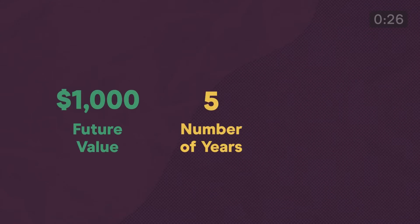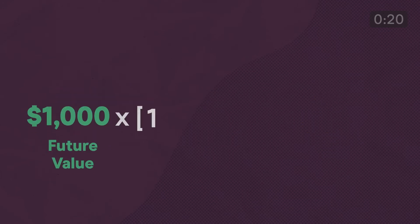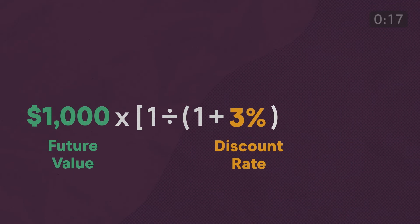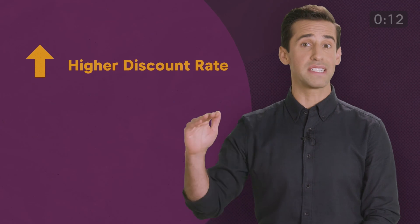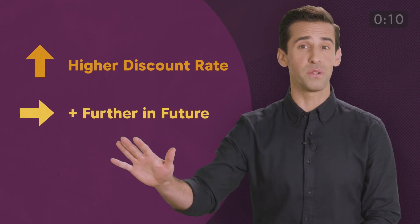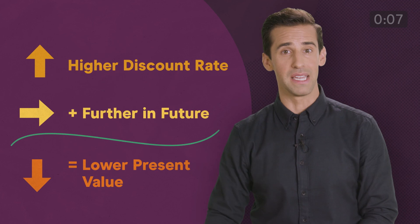Here's an example. The present value of receiving a thousand dollars five years from now, assuming I could have received a three percent annual return, would be one thousand times one divided by one plus 0.03 to the power of five, which equals about $863. So the higher the discount rate and the further out into the future the payment is, the lower the present value will be.